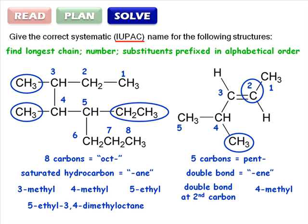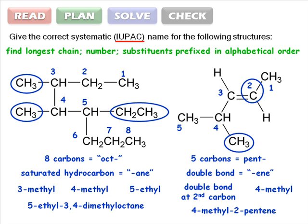So we can combine all this information and name the molecule, 4-methyl-2-pentene. Finally, check that you've named both the molecules, and that you haven't made a simple mistake, like numbering from the wrong end, or missing a substituent. We haven't, so we're done.